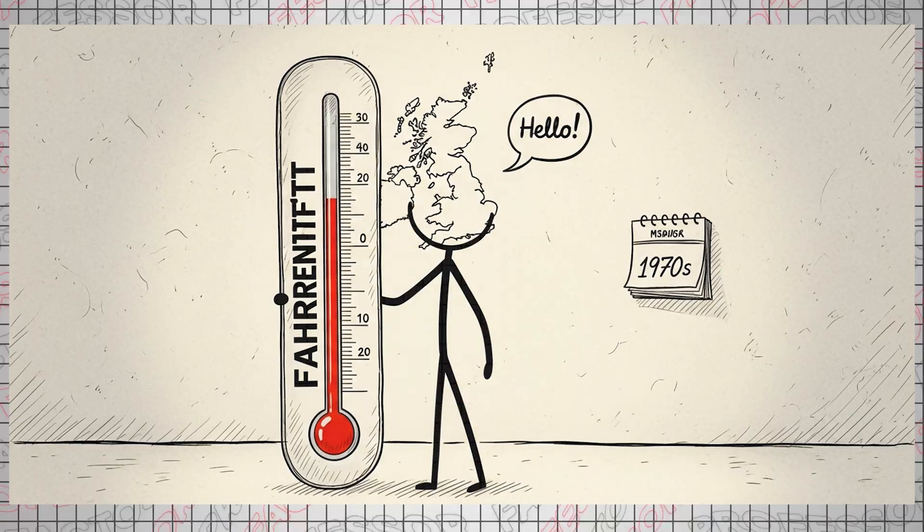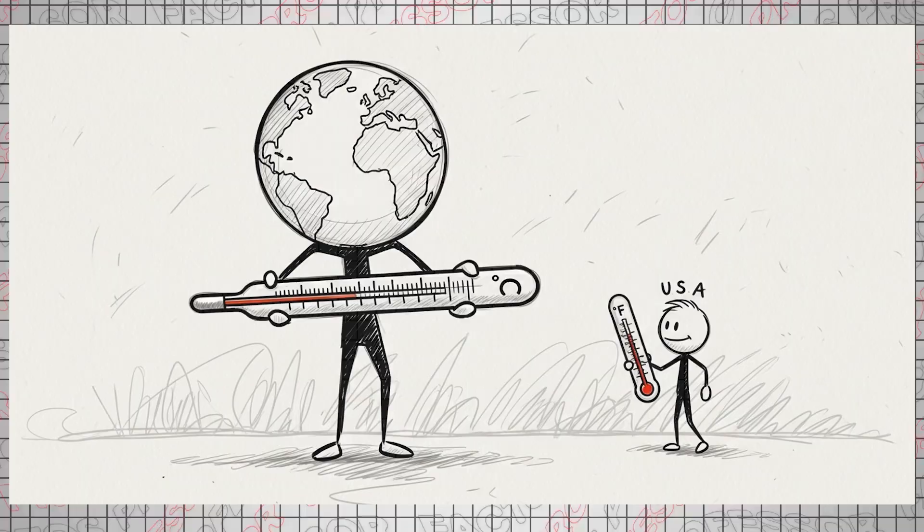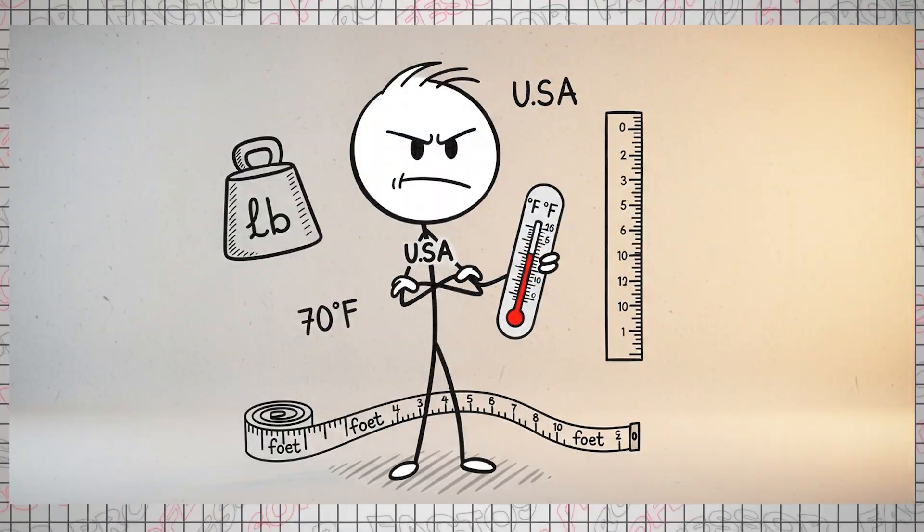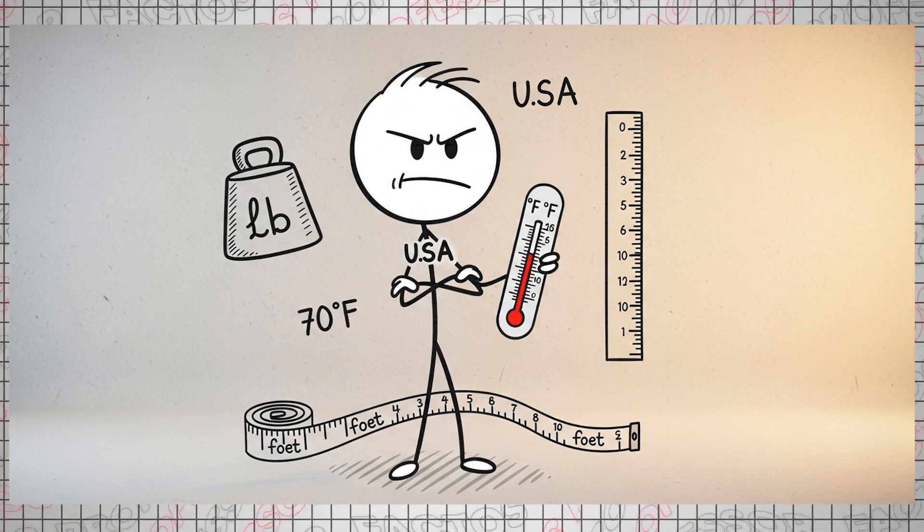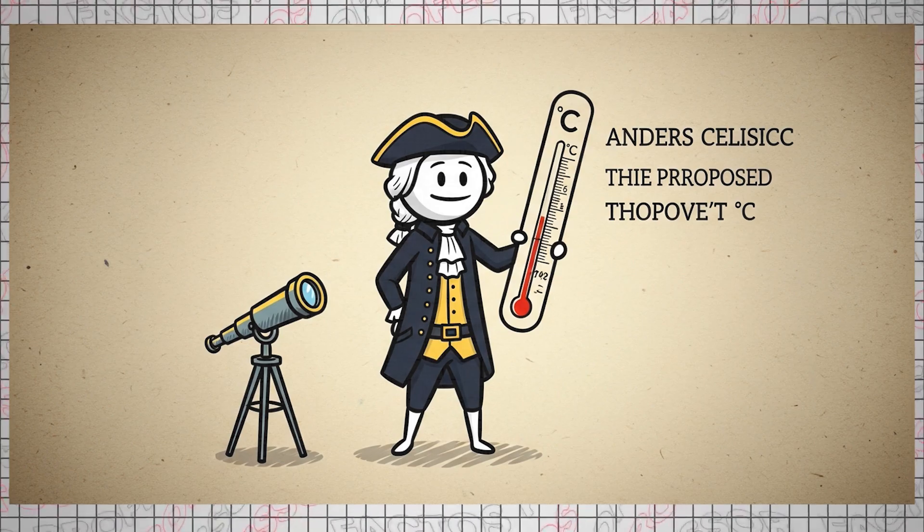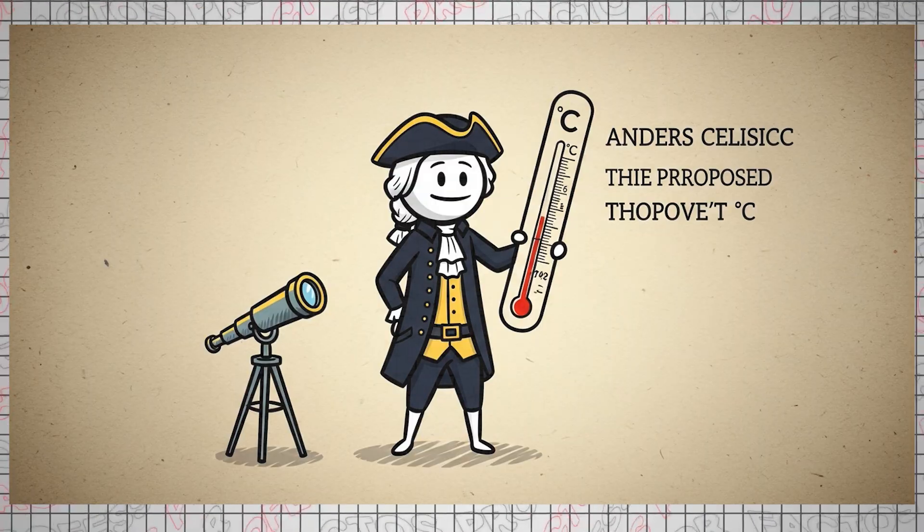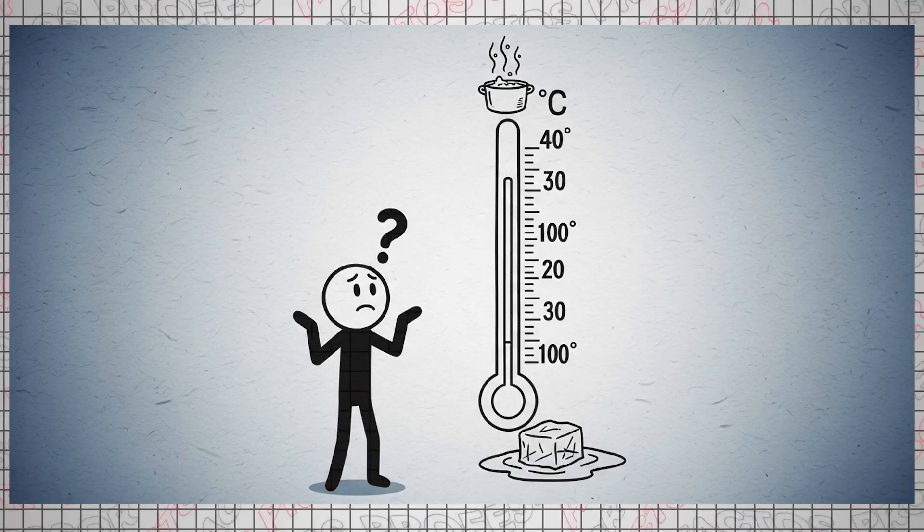The Fahrenheit Scale remained the most important temperature scale in English-speaking countries until the 1970s. Today, it has been almost entirely replaced by the Celsius Scale, except in the United States, which stubbornly continues to use Fahrenheit alongside quirky imperial units like pounds, inches, and feet.